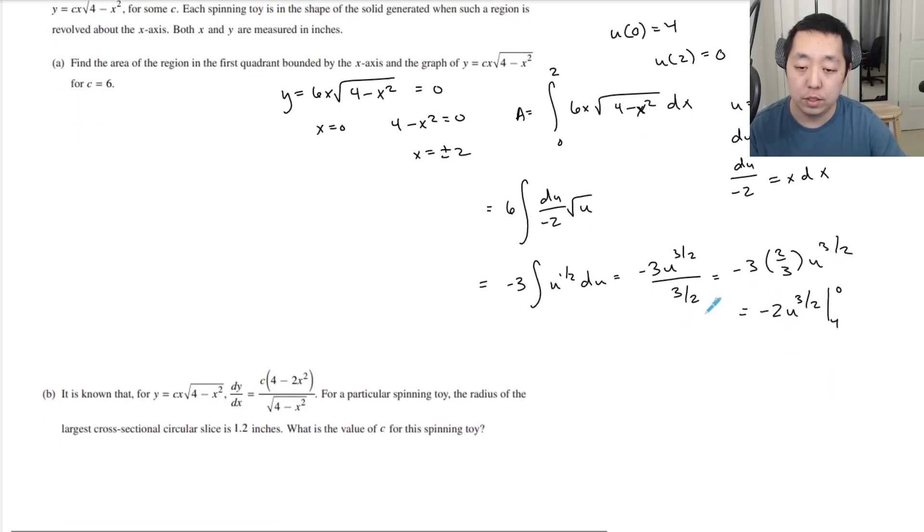We can swap the bounds and make it positive: 2u^(3/2) from 0 to 4. That's 2 times 4^(3/2) minus 0. Square root of 4 is 2, 2 cubed is 8, 8 times 2 is 16.